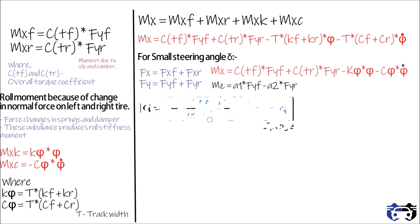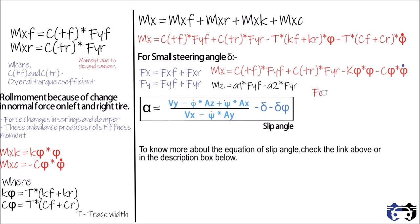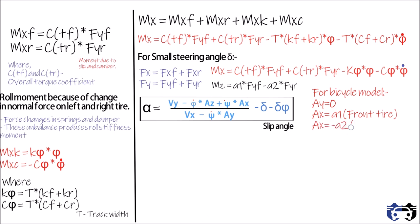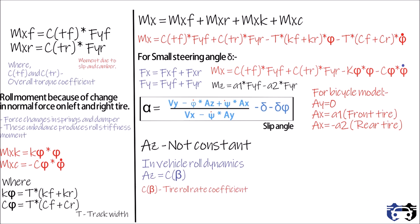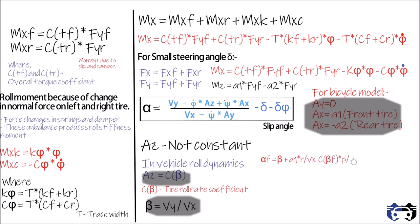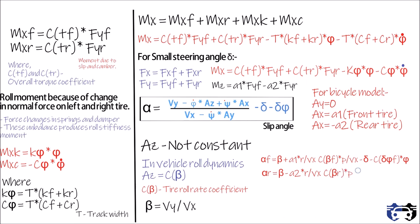You all know the slip angle is given by this equation. Here for the bicycle model ay equals to 0, ax equals to a1 for front tyre, ax equals to minus a2 for rear tyre and az is not constant. In vehicle roll dynamics az equals to c beta where c beta is the tyre roll rate coefficient and beta is approximated as vy by vx. On putting these values we get the following value of slip angle alpha f and alpha r for the front and rear tyre respectively.